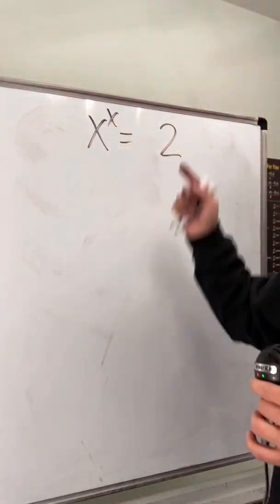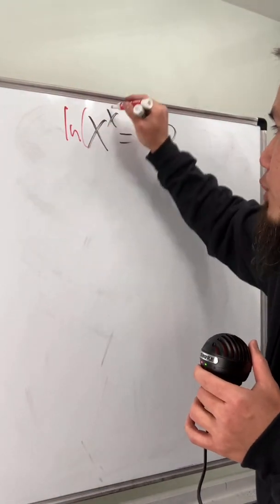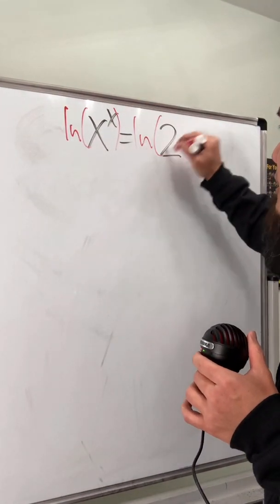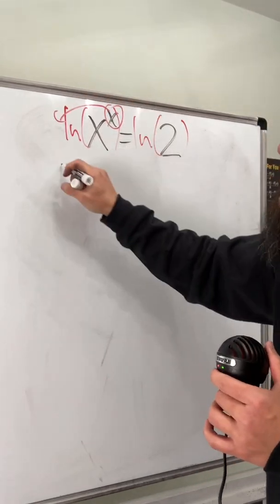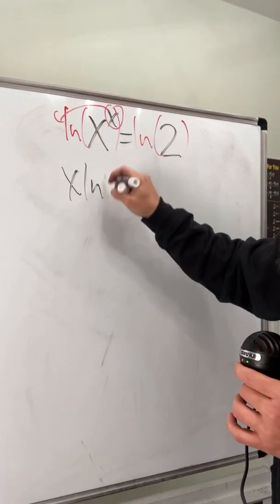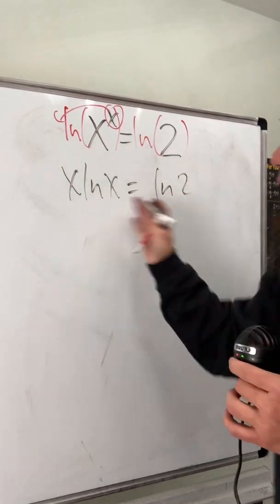How do we solve the equation x to the x power is equal to 2? First, we take the natural log on both sides, because this way we can bring the x to the front. Now we have x times ln x, and this is equal to ln 2.